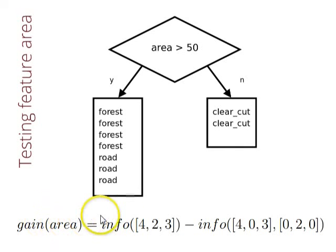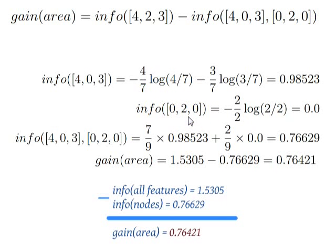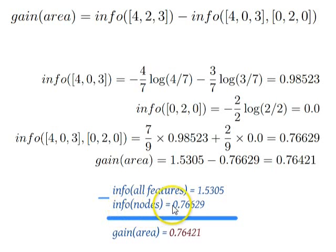To calculate the gain for the feature area, we take the information value for all elements minus the information value for the left and right branches. We can see that the information value for the right branch — the one with only Clear Cut — is 0, which means the entropy is 0, because all elements belong to the same class. This is a good threshold. Combining both branches gives the information value for the nodes. The final calculation: 1.53 minus 0.76 equals 0.76.